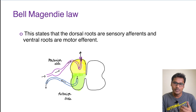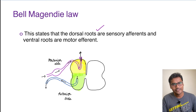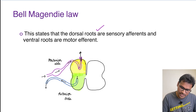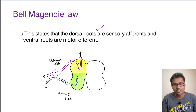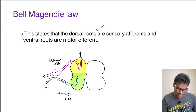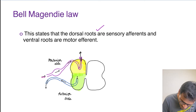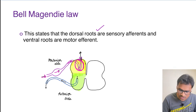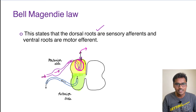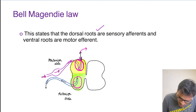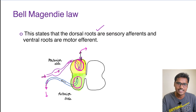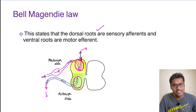Coming to the Bell-Magendie law, this is the simplest law among all. It states that the dorsal roots are sensory afferents and the ventral roots are motor afferents. The dorsal afferents reach the dorsal horn of the spinal cord and travel towards the brain, whereas motor impulses from the brain travel downwards to the anterior side — also called the ventral roots — and innervate the muscles. This specific directional pathway is the Bell-Magendie law.